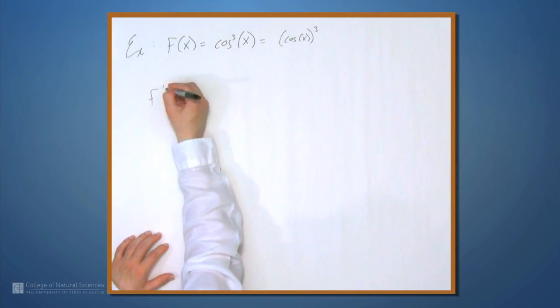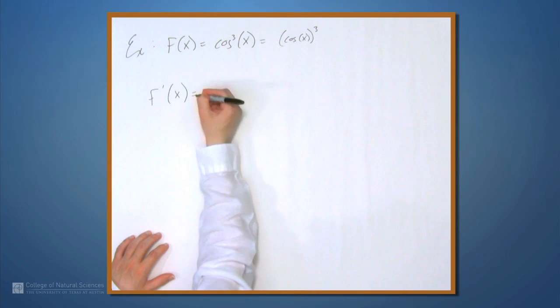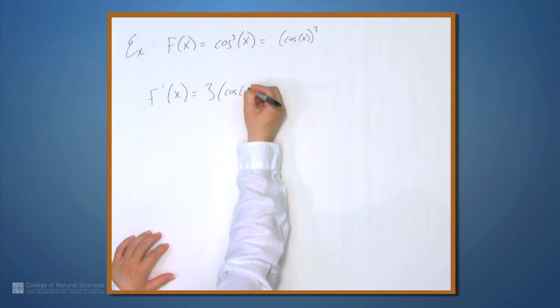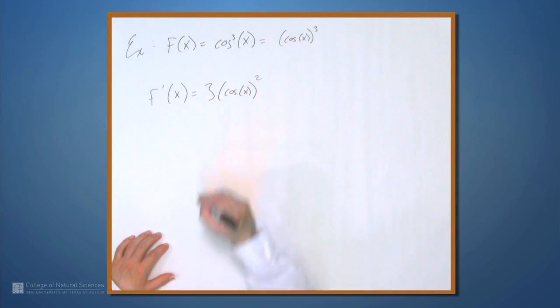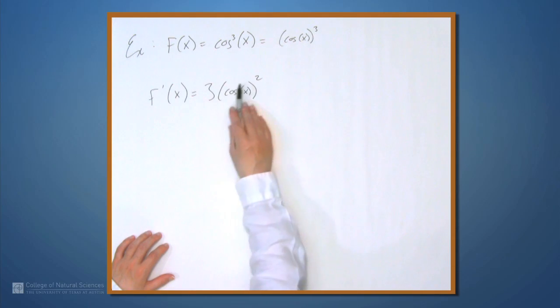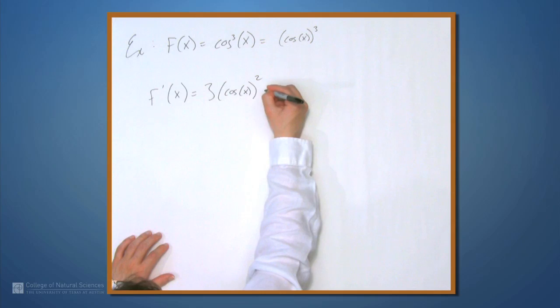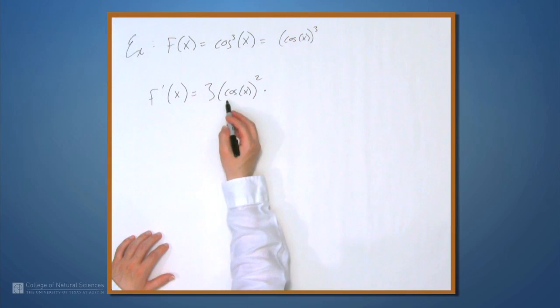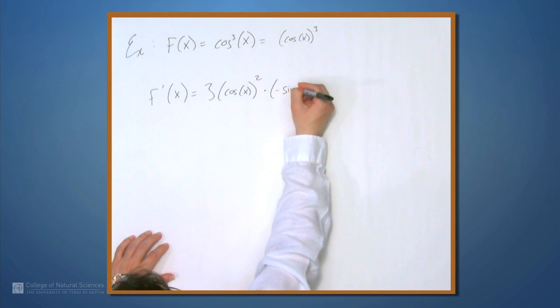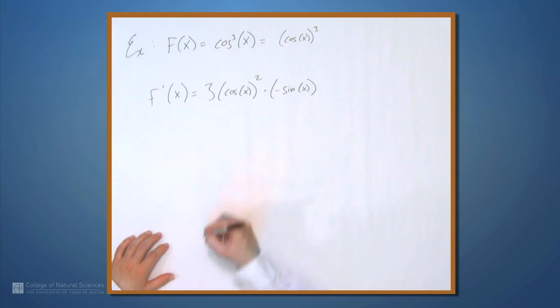So f' of x is 3 times cos x quantity squared. That's the part that comes from the derivative of something cubed, where we put the something in these parentheses. And then we multiply by the derivative of whatever's inside here. And the derivative of cosine is negative sine. And that's it. We could similarly rewrite this one, but I'm not going to bother in this case.